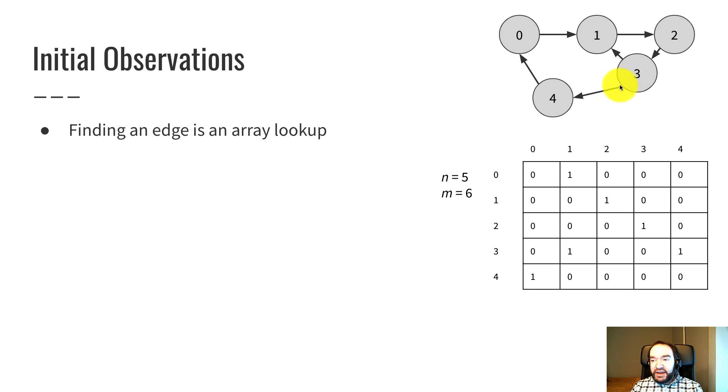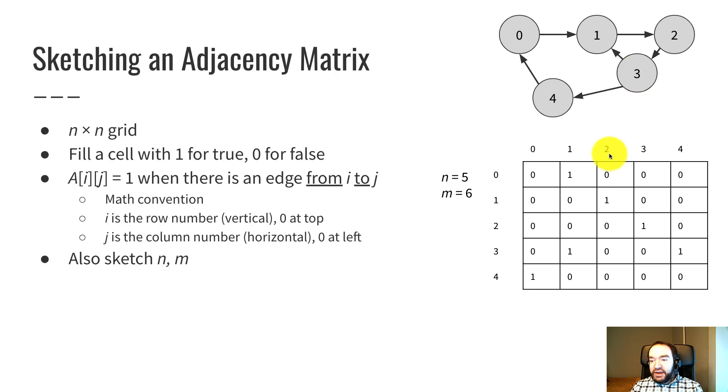So right here is a sketch of this graph. And just to show how this works, everywhere that there's an edge from i to j, we make the corresponding i, j entry of the matrix a one. Everything else is a zero. So one thing we can note is that there's one, two, three, four, five, six edges in the graph. That's why m is six.